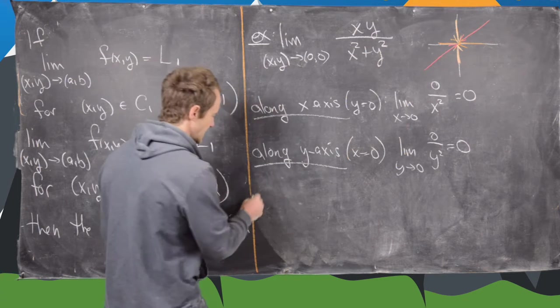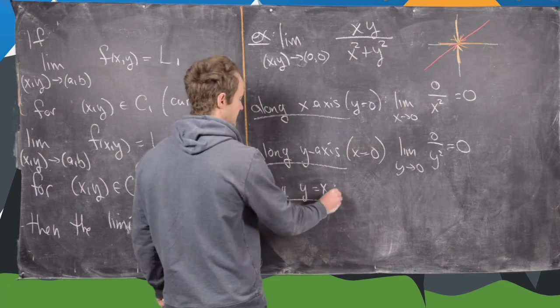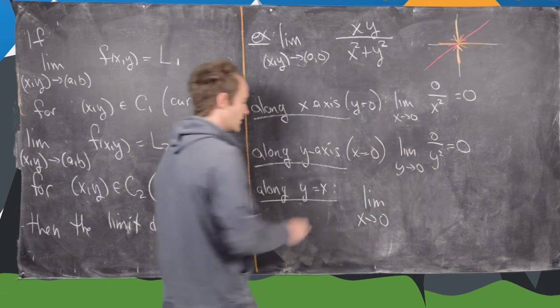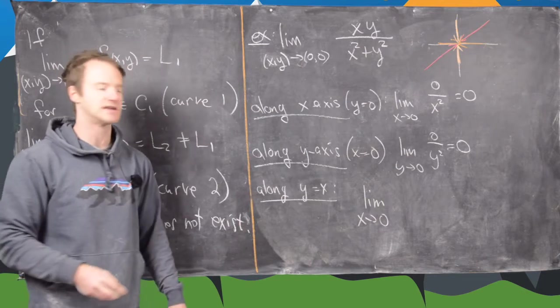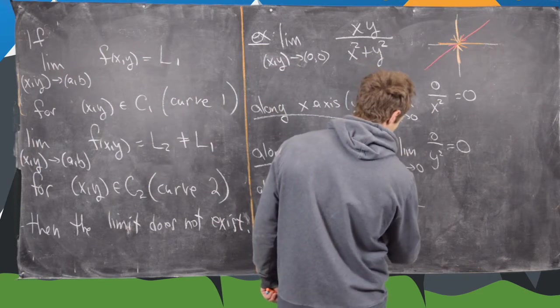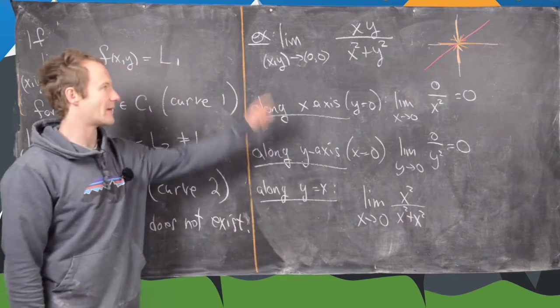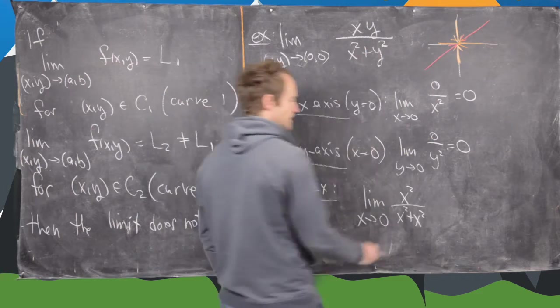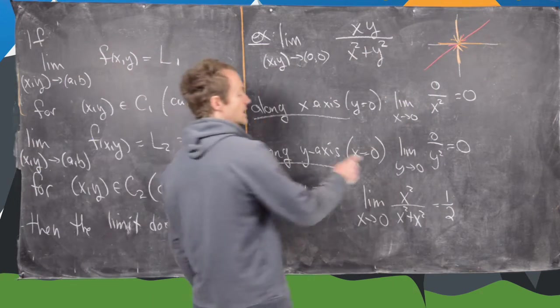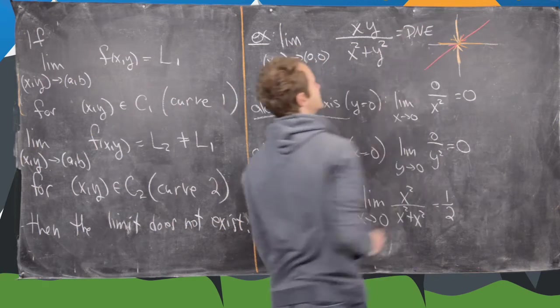We can actually go along the line y equals x. So that's going to transform this thing into the limit as x goes to zero of x squared over x squared plus x squared. We get that by replacing every y with an x. But notice this limit is obviously one half. And so since one half is not the same thing as zero, we get that this limit does not exist.